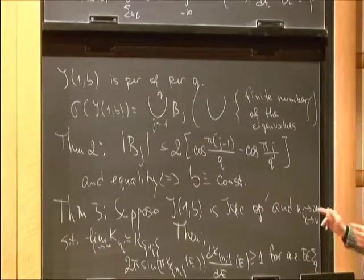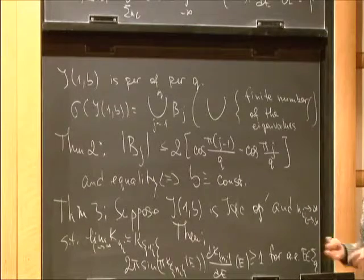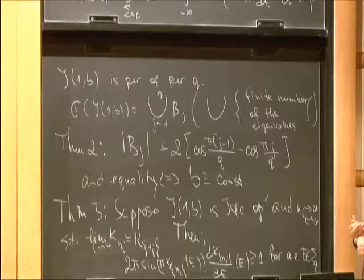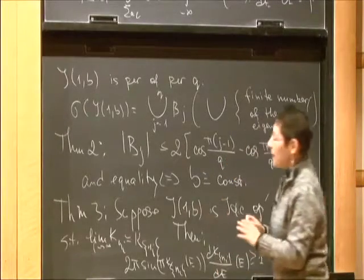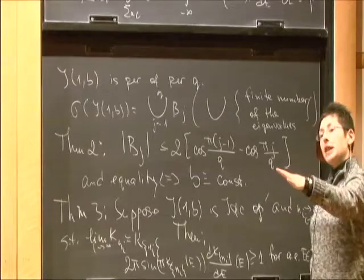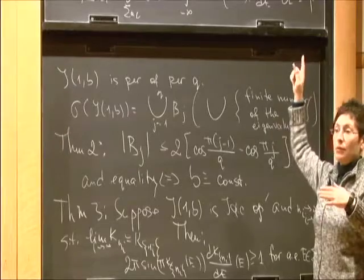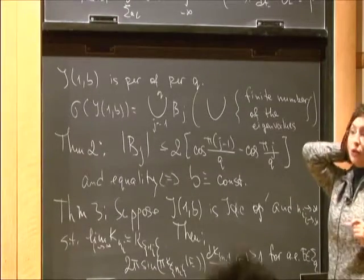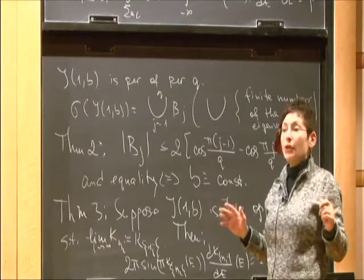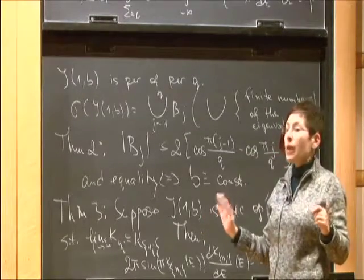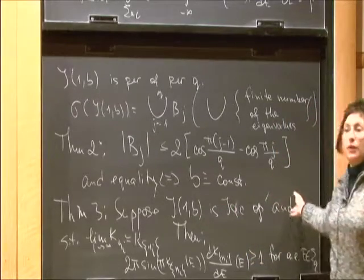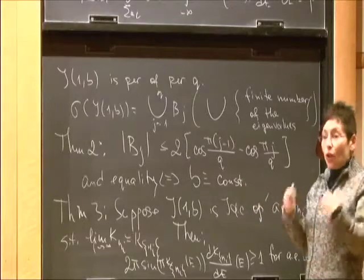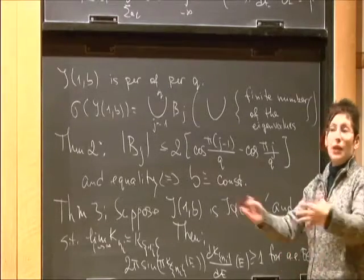Dyft and Simon obtained this band inequality similarly to how they obtained the star — by integrating at the edges of the bands rather than from −∞ to ∞. We do things differently. First we obtain this band inequality using only extremal properties of certain polynomials, and then using this we obtain the local Dyft–Simon inequality in full generality without assuming ergodicity. The precise statement is: suppose J_{1B} is a Jacobi operator, and n_i is a subsequence for which the limit of k_{n_i} as i → ∞ exists. Then 2π sin(πk_{n_i}(E)) · (dk_{n_i}/dE)(E) ≥ 1 for almost every E in the AC spectrum.